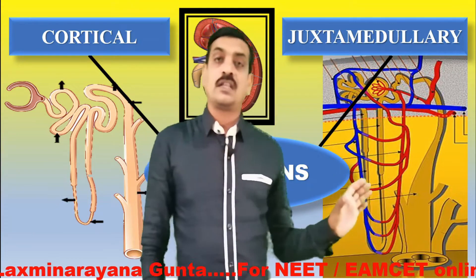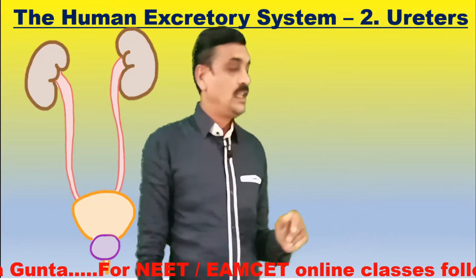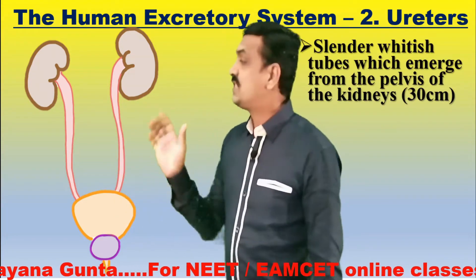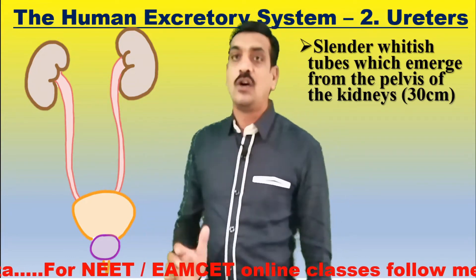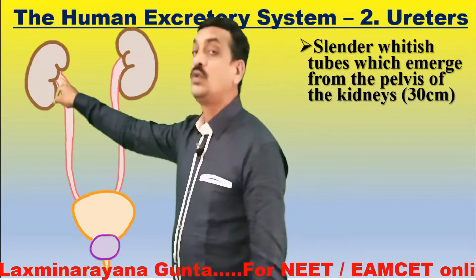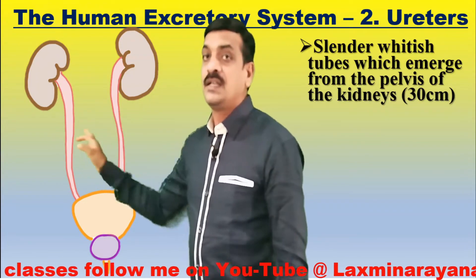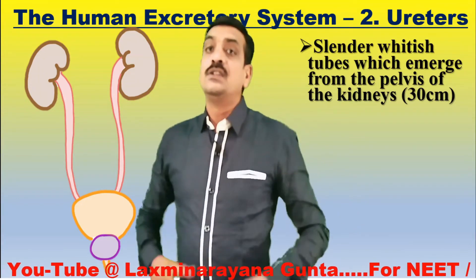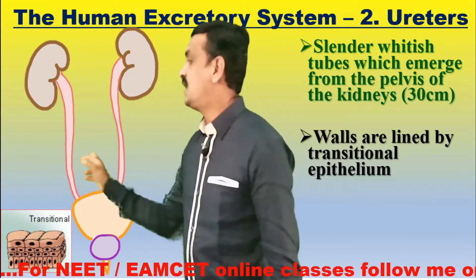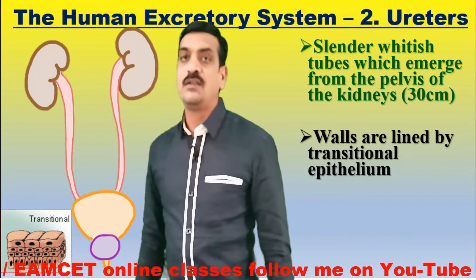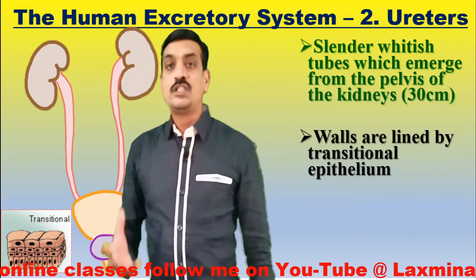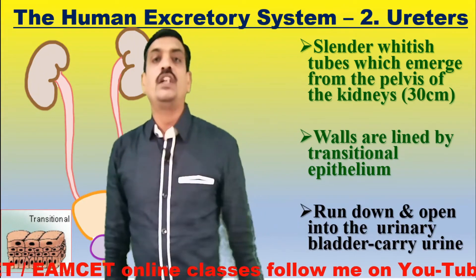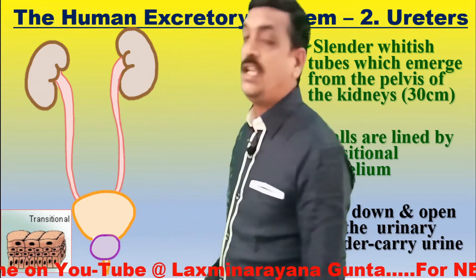We have finished the concept of kidneys. Now let us move to the ureters. Ureters are a pair of slender whitish tubes which emerge from the pelvis of the kidney through the hilum. They measure nearly 30 centimeters in length, run downward, and join the urinary bladder. The walls of the ureters are made up of transitional epithelium, a specialized epithelium also observed in the urinary bladder. They carry urine to the urinary bladder.